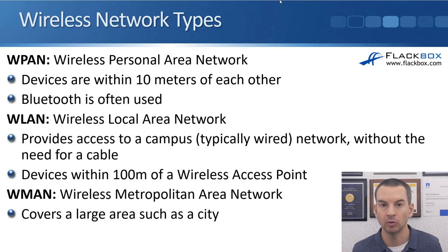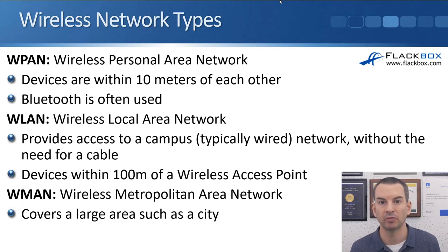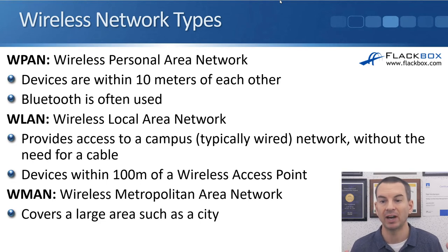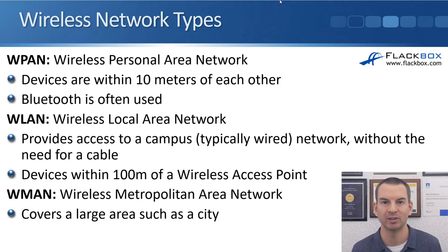A WLAN is a wireless local area network that provides access to a campus network. That campus will typically be a wired network, and having Wi-Fi also allows you to connect to it wirelessly. It's possible that the entire building — your corporate office — connects wirelessly, but more likely there's going to be a wired network there. With a WLAN, it allows you to connect to that wired infrastructure without a cable yourself, and the devices are within 100 meters of a wireless access point.